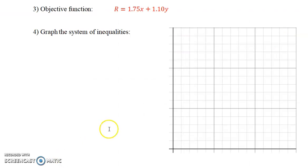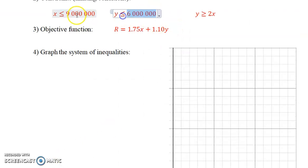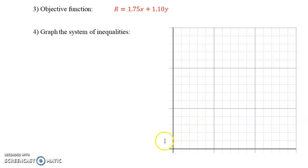Now we'll go to Desmos to graph this. Remember, it's 6 million and 9 million. But on our graph, we'll just go up by 1, 2, 3, 4, 5, 6, 7, 8, 9, 10. That way, we can just use it in the millions. And I'll show you how to represent that on a graph.